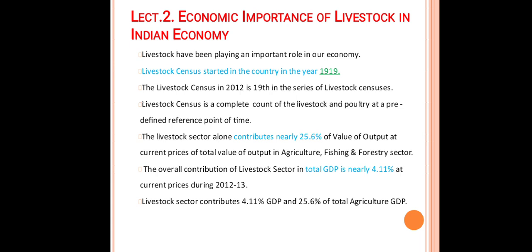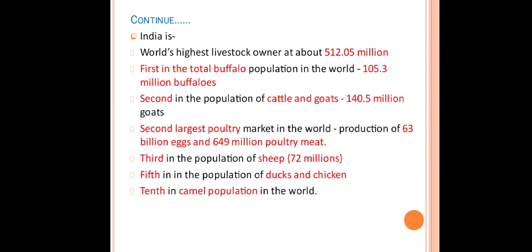The overall contribution of the livestock sector in total gross domestic product is nearly about 4.11 percent at current price during 2012-13. The livestock sector contributes 4.11 percent to GDP and 25.6 percent of total agriculture GDP. India is the world's highest livestock owner with above 512.5 million livestock population in the world.